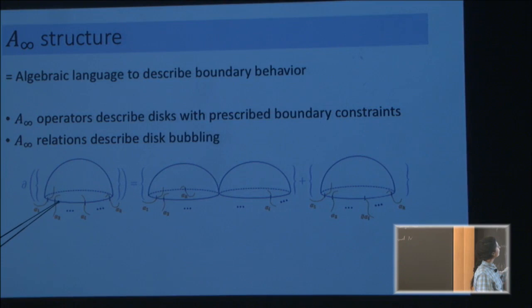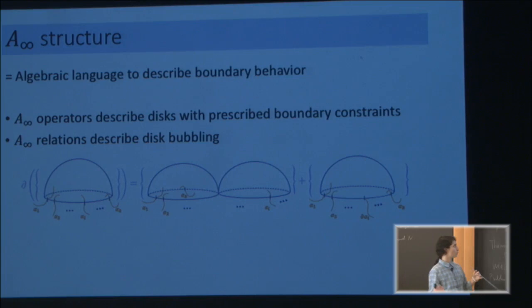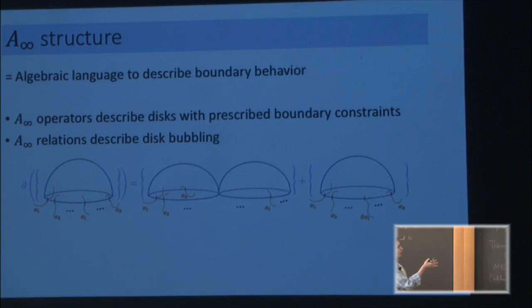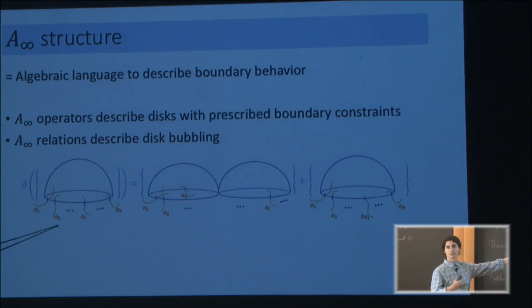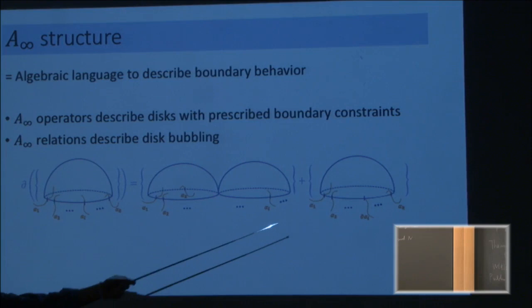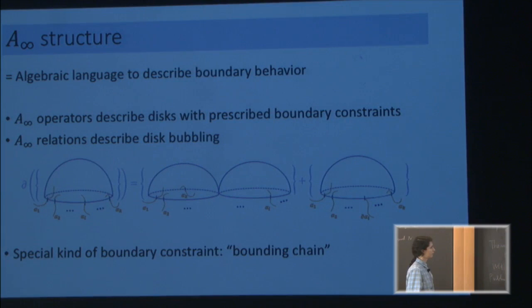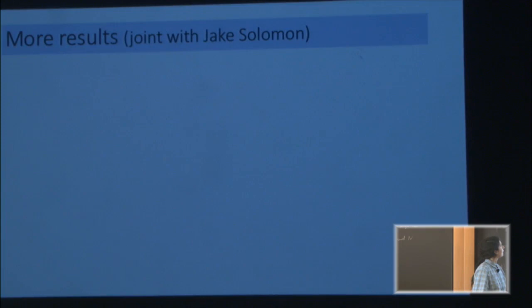If you take maps from the disk and fix the constraints you want the marked points to go to, then you have two kinds of codimension-one contribution. One comes from bubbling, just as before, and another comes from when the disk slides to the boundary of one of the constraints — the next thing you know it will slide right off. So when the disk slides to the boundary of one of the constraints, you also get to the boundary of the moduli space with the given constraints on the marked points. This gives us hope: we don't know how to deal with just the bubbling, but maybe if we're clever enough and find smart boundary constraints, we can use this kind of boundary to cancel out with that kind. And this is indeed the case if we use a fancy gadget called bounding chains.